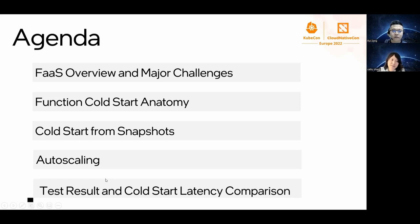Here's what we will cover in today's presentation. First, we will give a brief overview on FaaS and the major challenges faced by current FaaS providers. Then we will go through the steps involved in the FaaS function cold start process and analyze which steps contribute the most to the cold start latency. After that, we will deep dive into our new approach of creating a function instance from a snapshot. We will also talk about the auto-scaling bottleneck and our approach of scaling out new function instances inside an existing micro VM. Last, we will show our test results and compare the cold start latency between the existing way versus our snapshot-based way of starting a function instance.